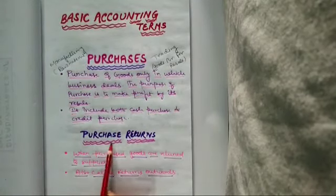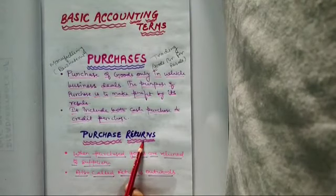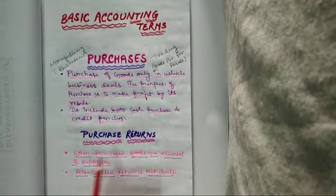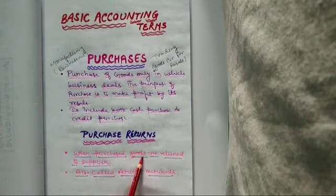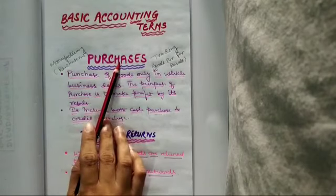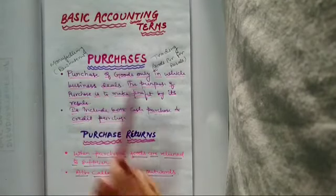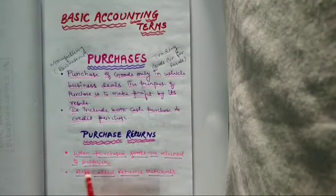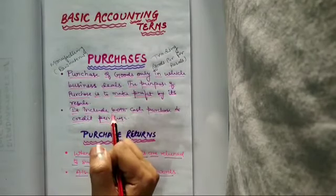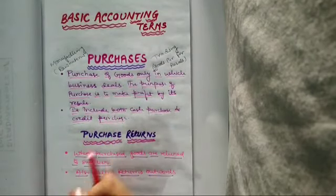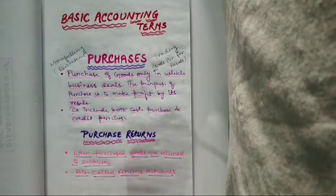Now the second term is purchase returns. When purchase goods means जब हमने यहां पर goods purchase किये are returned to supplier. किसे purchase किये होंगे हमने supplier से, जो raw material या goods supply करते हैं that is called a supplier.